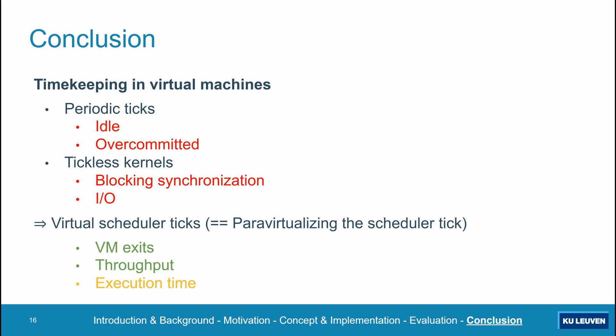In conclusion, when it comes to timekeeping in virtual machines, both traditional tick management techniques induce problematic overhead for certain workloads. We proposed para-virtualizing the scheduler tick to mitigate these issues, and we have shown that our proof-of-concept implementation of Virtual Scheduler Ticks, named Paratick, drastically reduces VM exits and increases system throughput, in some cases also significantly reducing application execution time. Virtual scheduler ticks is in our estimation a promising concept which we hope will one day find its way into the mainline Linux kernel. Thank you for your attention.